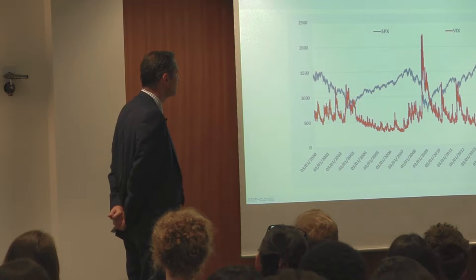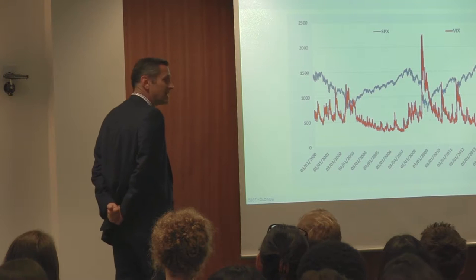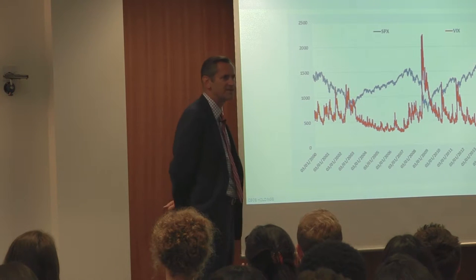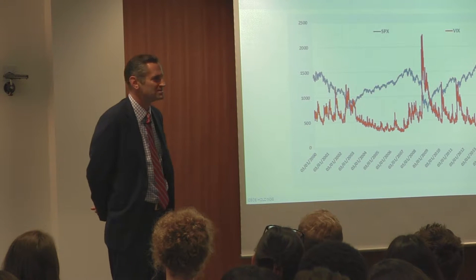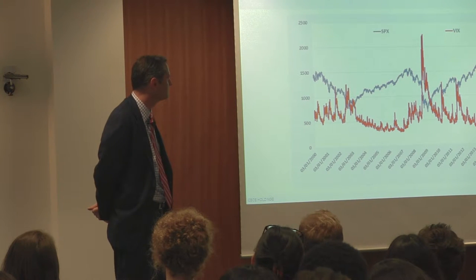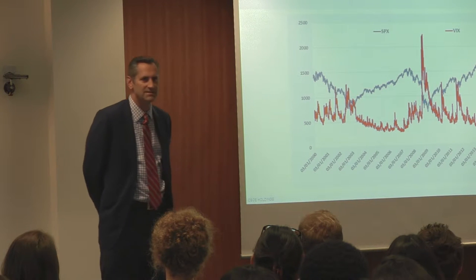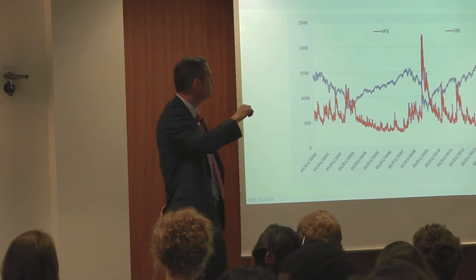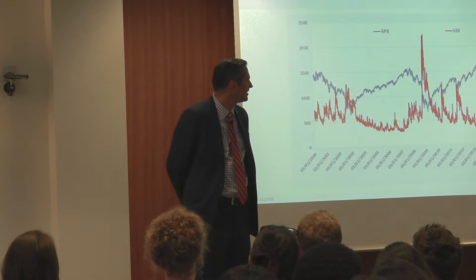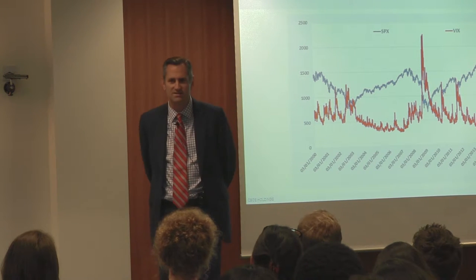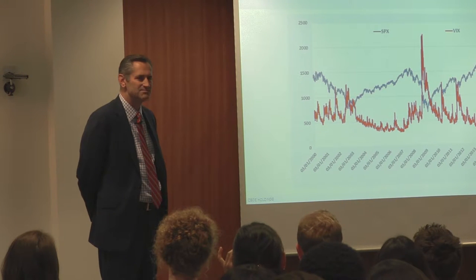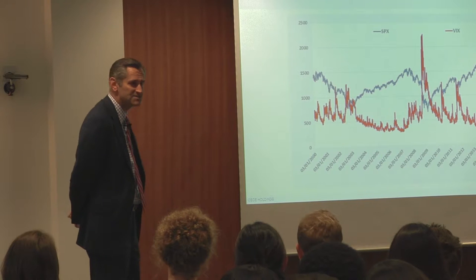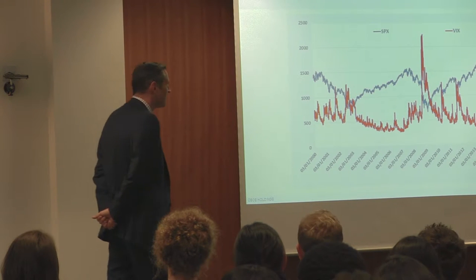You see on this chart we've got the SPX — that's the ticker symbol for the S&P 500, which is an index of large cap U.S. stocks. That's the blue line. The red line is VIX, which stands for the volatility index. At CBOE, we trade a lot of S&P 500 options and a lot of VIX futures and options. The S&P 500 is the underlying, and the options on the S&P 500 are the derivative.